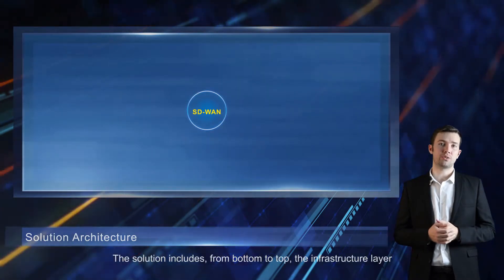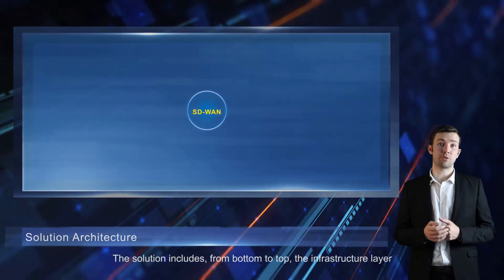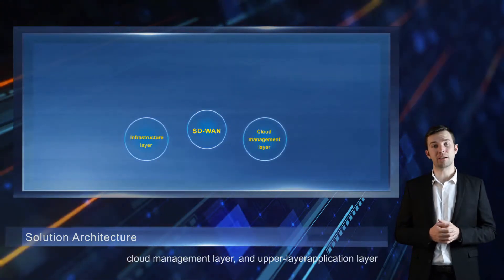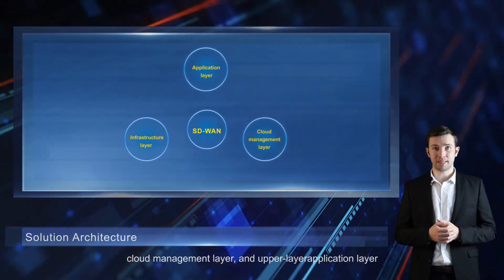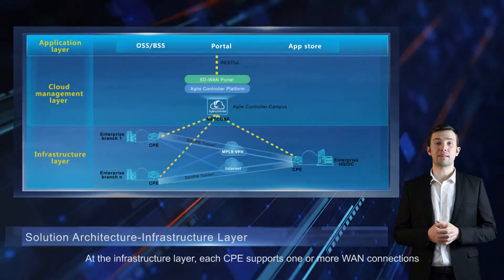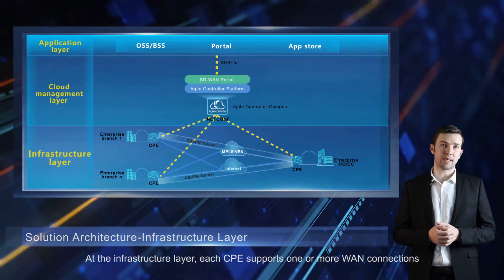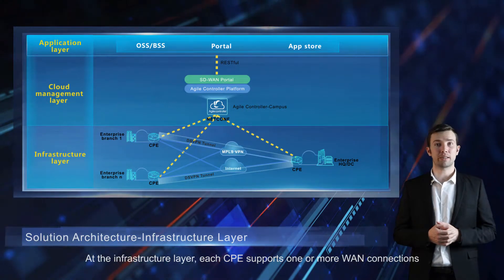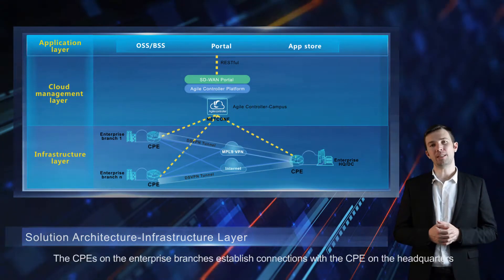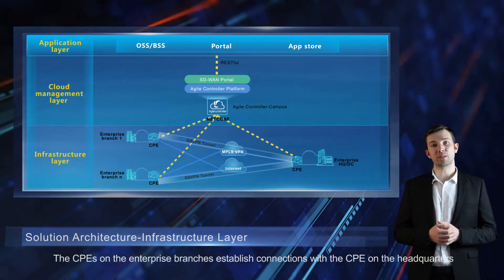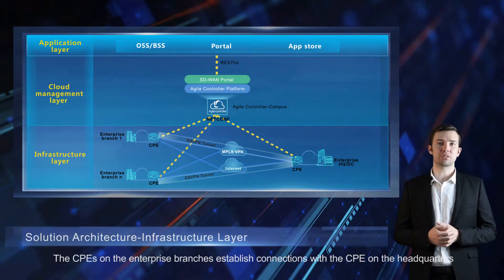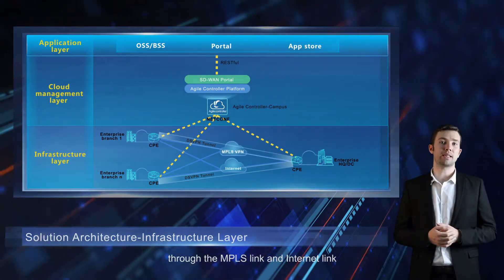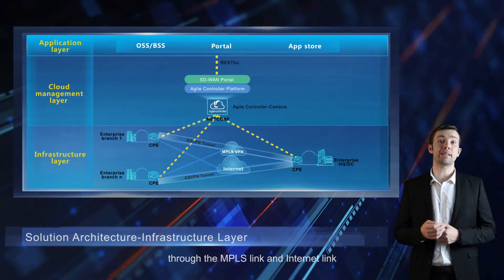The solution includes, from bottom to top, the infrastructure layer, cloud management layer, and upper layer application layer. At the infrastructure layer, each CPE supports one or more WAN connections. The CPEs on the enterprise branches establish connections with the CPE on the headquarters through the MPLS link and internet link.